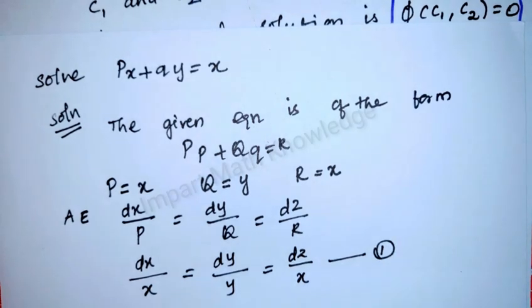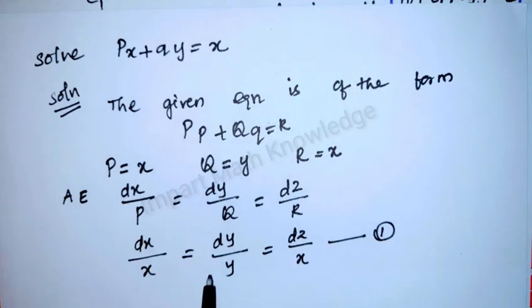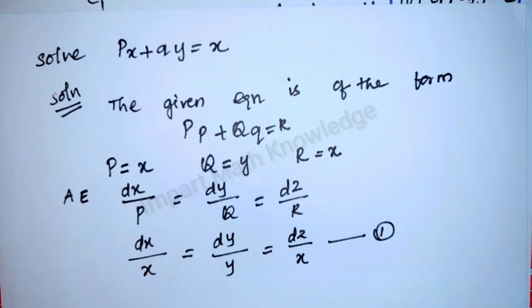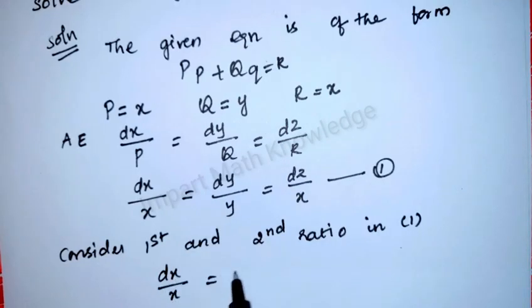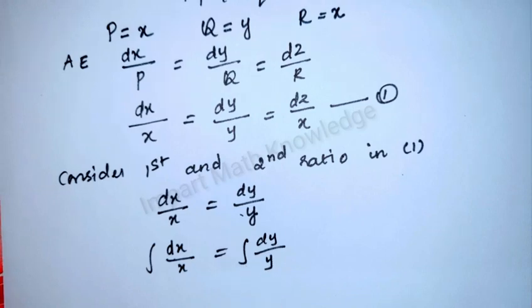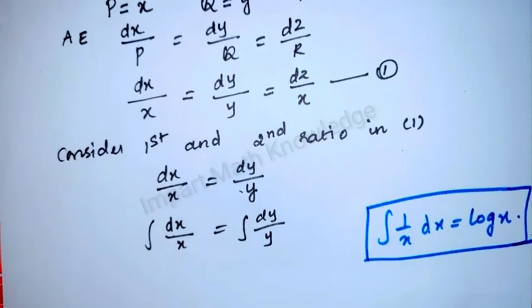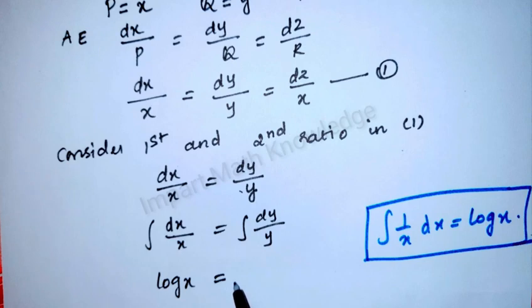We can apply the grouping method here. Select two ratios — when selecting the ratio, make sure it should be integrable. Select the first and second ratio: dx/x = dy/y. Integrating this: the integral of dx/x equals the integral of dy/y. We know that the integral of 1/x dx is log x, so this gives log x = log y plus constant.